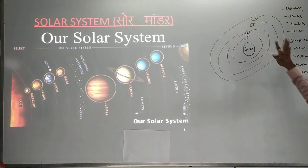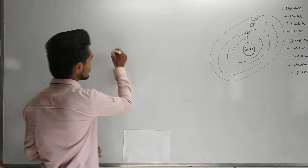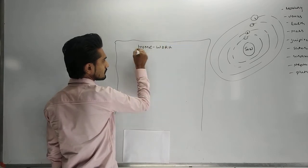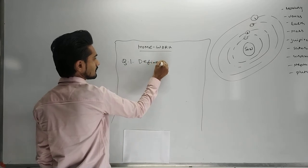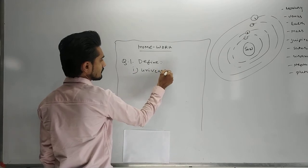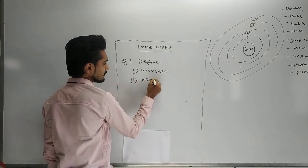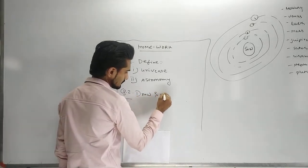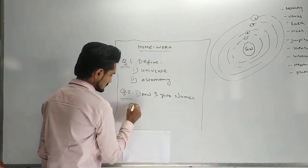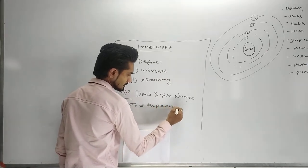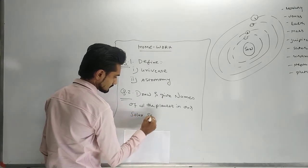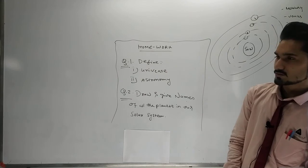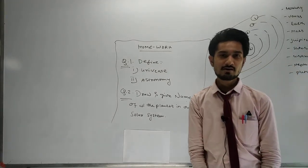Today's homework has three questions. Question number one: define universe and astronomy. Question number two: draw and give the names of all the planets in our solar system. That's it for today's lecture. Thank you very much. If you have any doubts, you can message me personally on WhatsApp or you can call me. Till then, bye bye everyone, and take care of yourself.